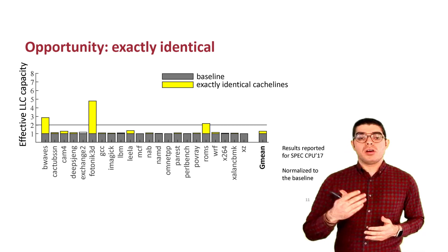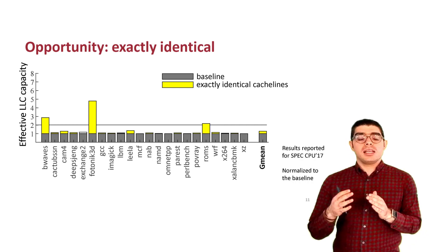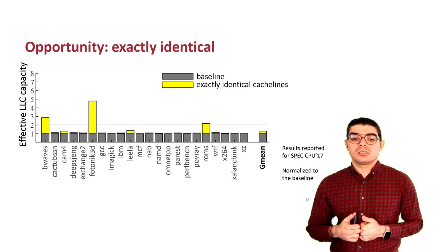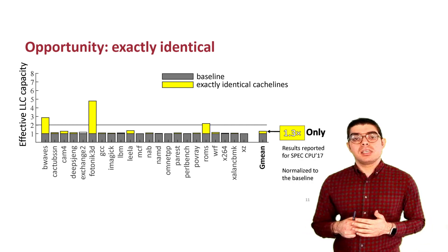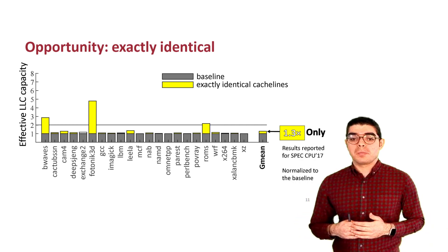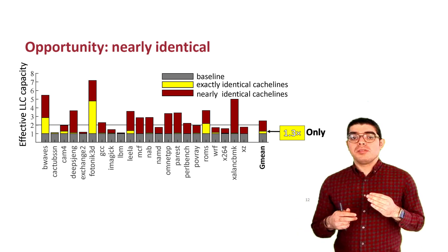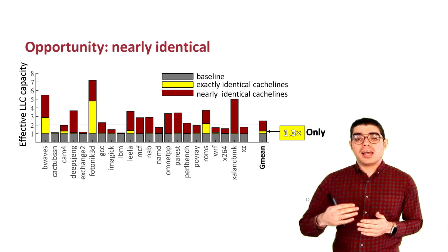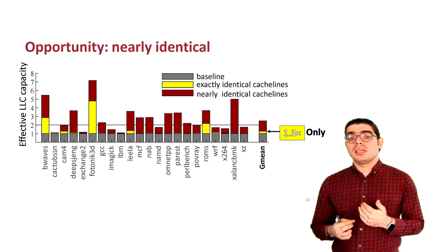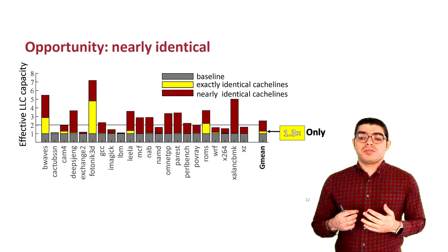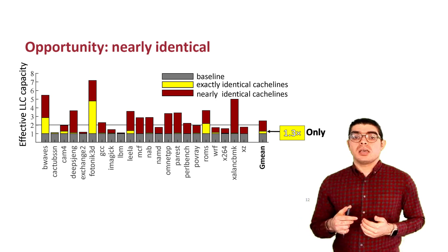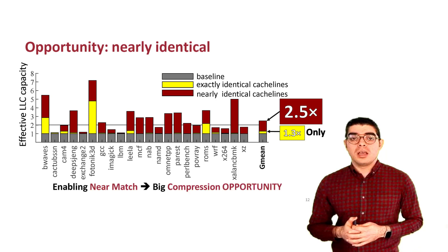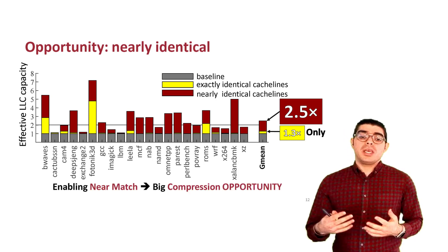To answer this, we ran the following experiment. Consider an ideal cache compression mechanism that instantly searches the whole LLC and avoids storing identical copies: the effective LLC capacity is increased by only 1.3 times over baseline. To measure how much opportunity is missed, we relax the exact-match criteria and instead search for similar data lines, storing only the bytes that differ from the most similar line in the cache. This time, LLC capacity increases by 2.5 times — significantly higher — showing that enabling near-match brings a big compression opportunity.